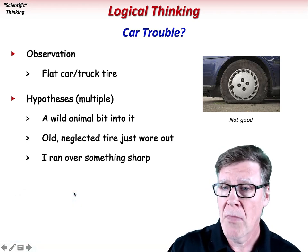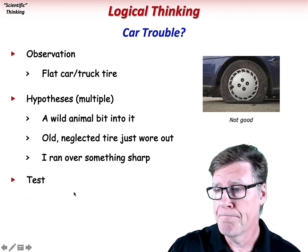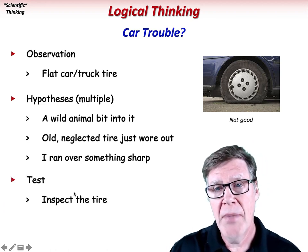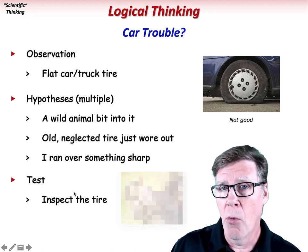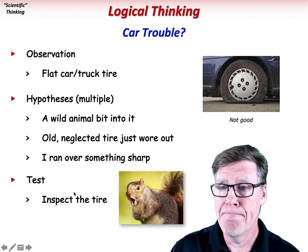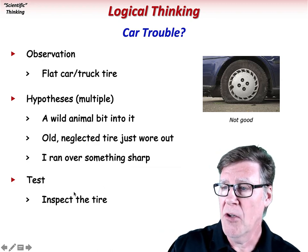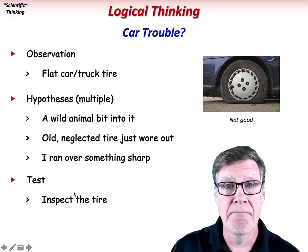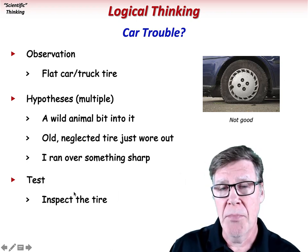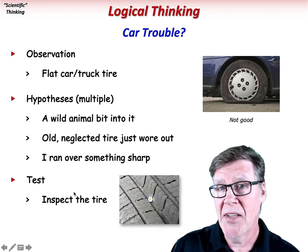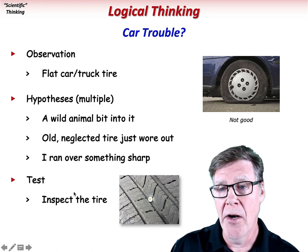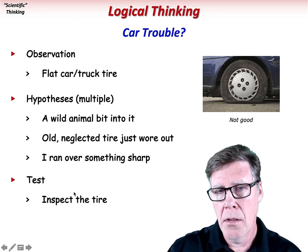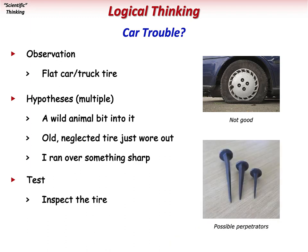Now to test these hypotheses we simply inspect the tire. If there are deep penetrating bite marks, then maybe our wild animal hypothesis is the correct one. Or if the steel belts are showing through the rubber, then maybe the neglected tire scenario is the winner. But if there is a puncture or even a piece of metal sticking out of the tire, then the sharp object scenario is the correct hypothesis. Simply observe, offer some possible explanations, and then pick the most reasonable one.